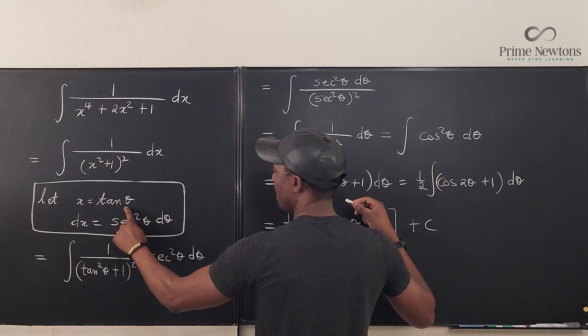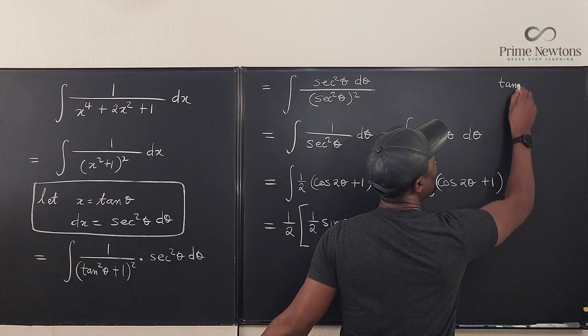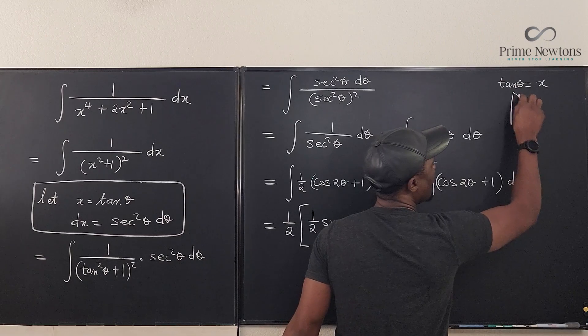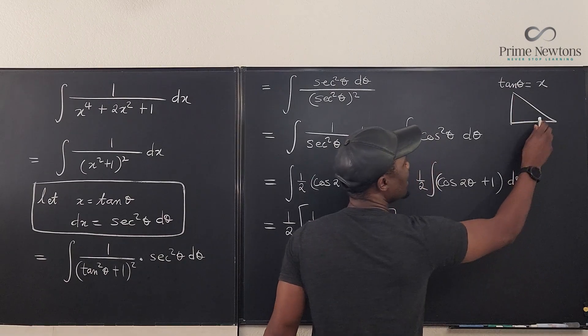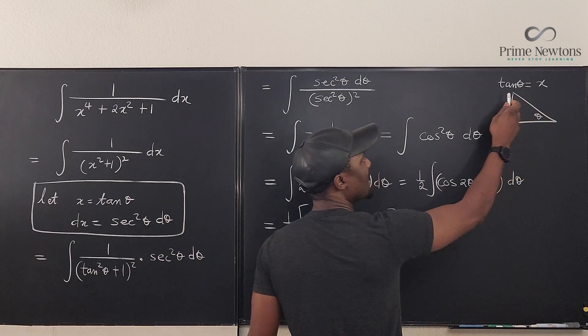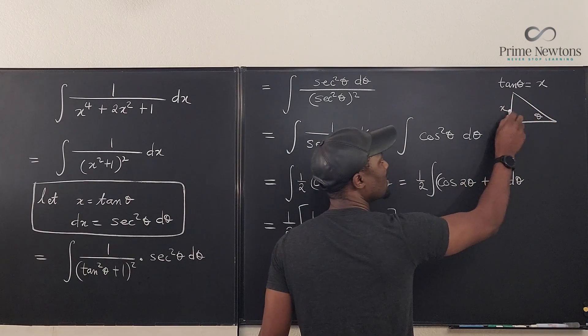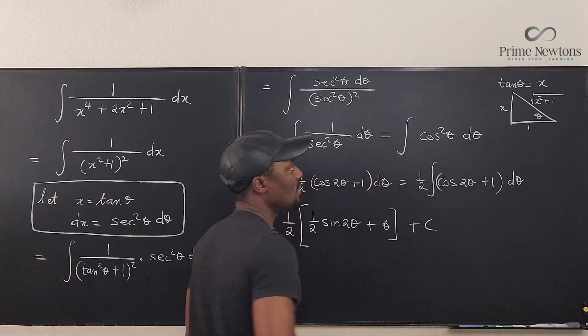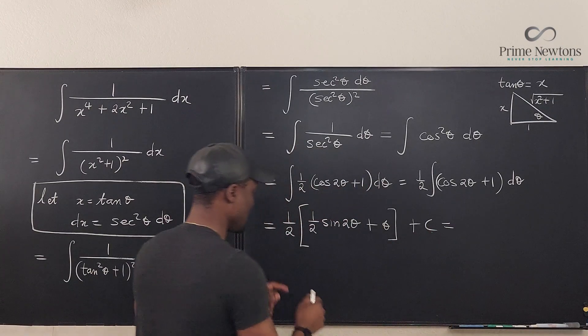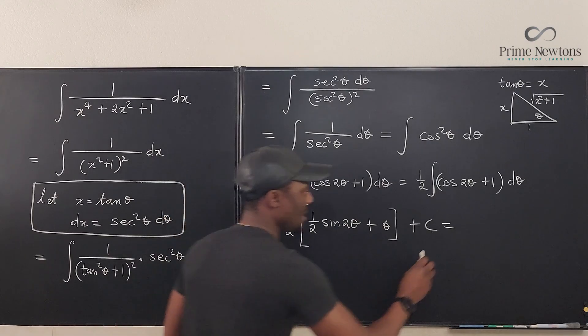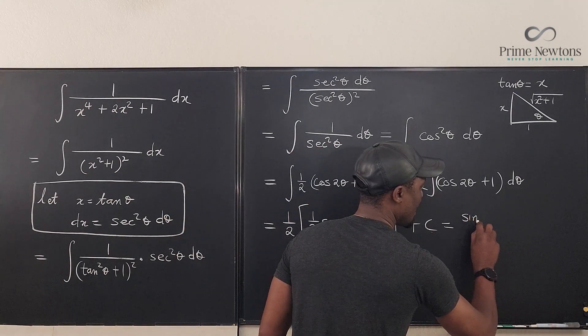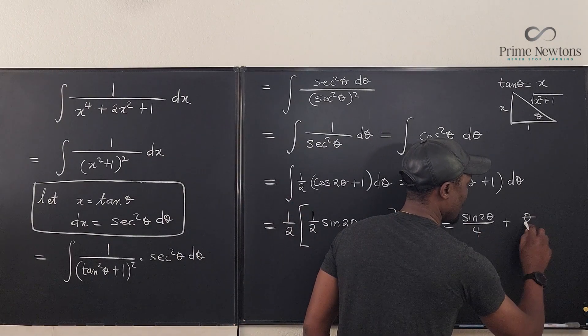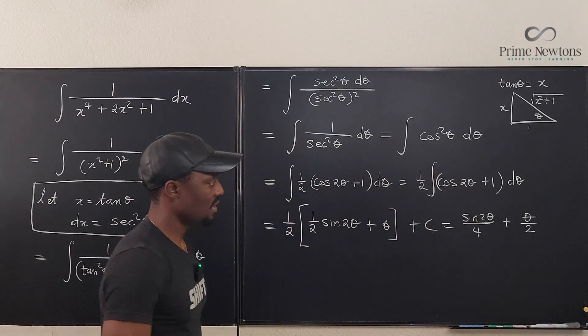So if x equals tan θ, we're saying that tan θ is equal to x. That means if we have a right triangle and this angle is θ, the tangent of this angle is opposite over adjacent. That's x over 1. This must be the square root of (x^2 + 1). We can say this is equal to... let's clean this up. This is 1/4 of sin 2θ. So this is sin 2θ / 4, θ / 2, plus c.